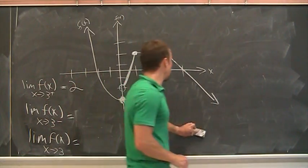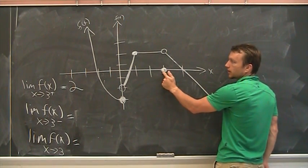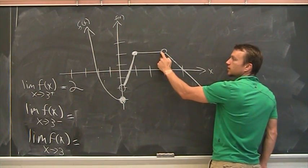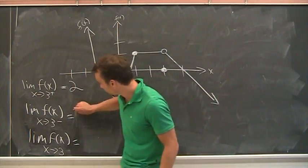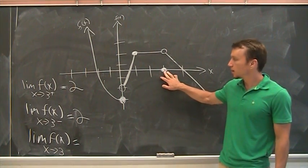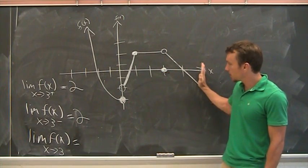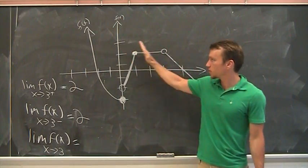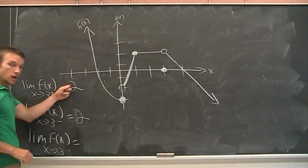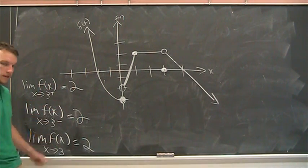What about from the other side? As x approaches 3 from the left, here's x equals 3; the function is up here, and as you approach from the left, you're also up here at 2. The function's actual value is down there, but that doesn't matter — the limit is up here. From the right it's 2, from the left it's 2, so the limit of f(x) as x approaches 3 is also 2. As long as the right-handed limit equals the left-handed limit, the overall limit equals 2.